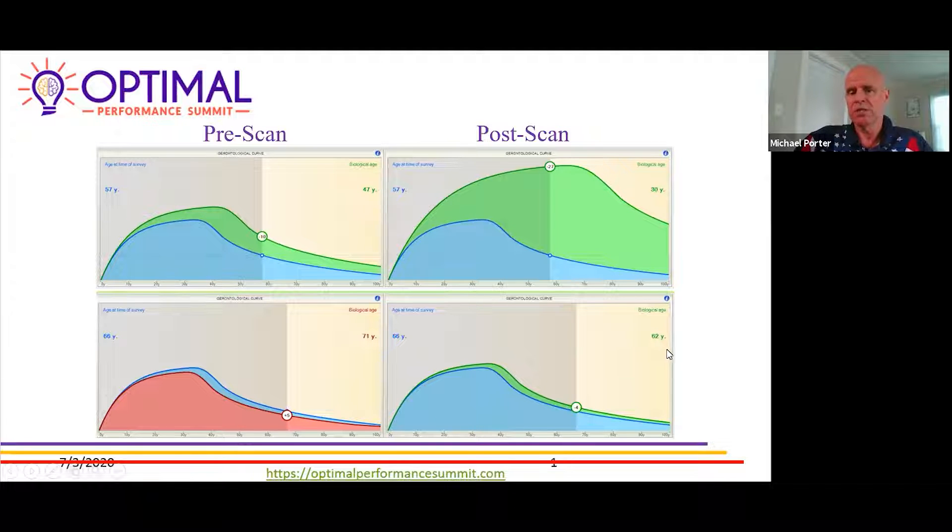Once we can get that nervous system rebooted, in just that one session we lowered this by four years. So that's the value of being able to show that person four weeks later what you've been able to do, or eight weeks later, or even 12 weeks later. The other value is you've got a person three months down the road, they stop coming in, they're missing appointments, they're not doing what you're asking at home.